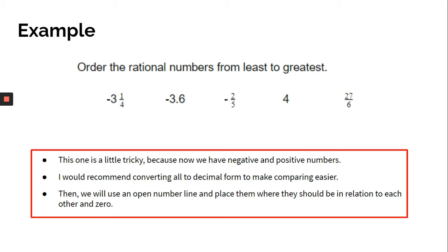This one is a little tricky because now we have negative and positive numbers with fractions and decimals. I would recommend converting all to decimal form to make comparing easier. Then we will use our open number line and place them where they should be in relation to each other and zero.